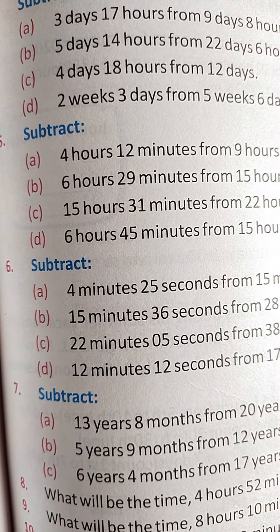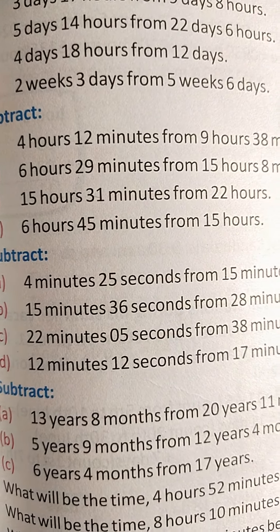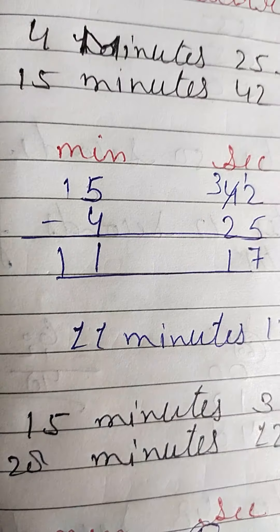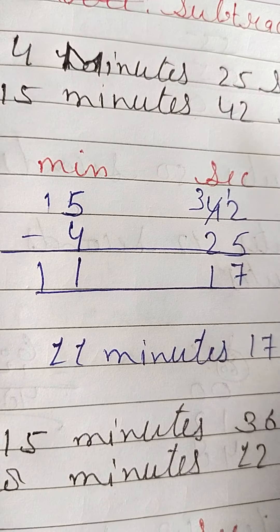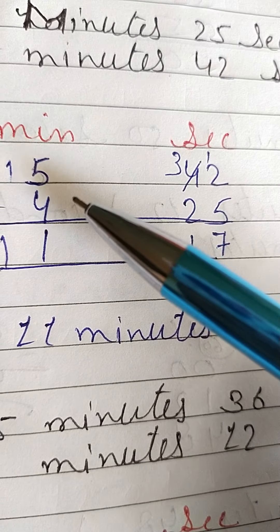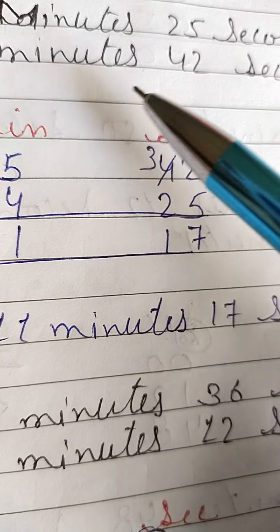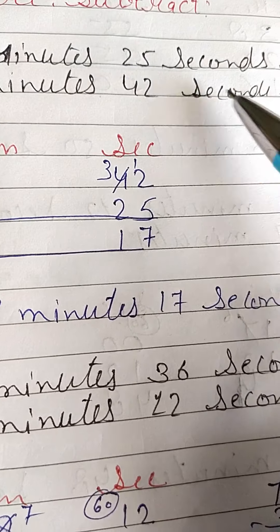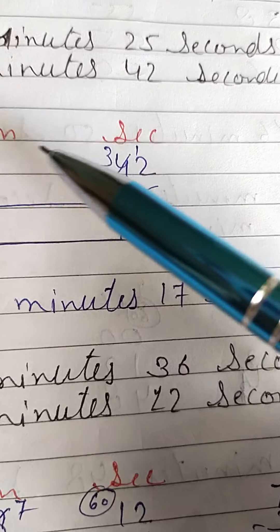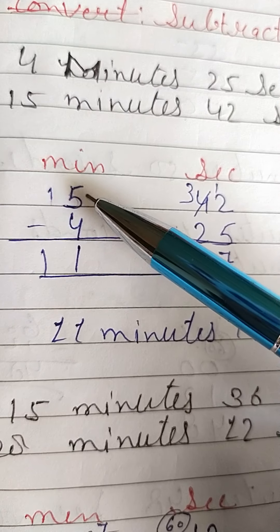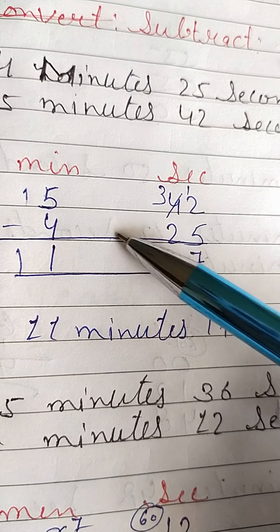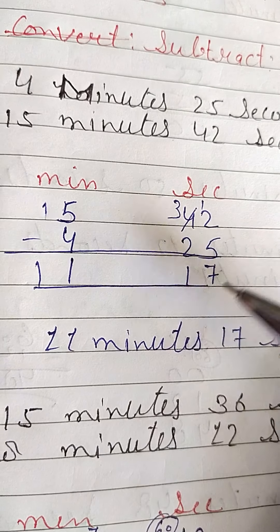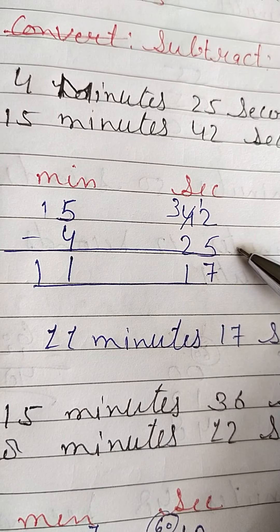Here, subtract 4 minutes 25 seconds from 15 minutes 42 seconds. Students, now you will subtract it. You will write minutes here and seconds here — 15 minutes 42 seconds on top, and 4 minutes 25 seconds below.